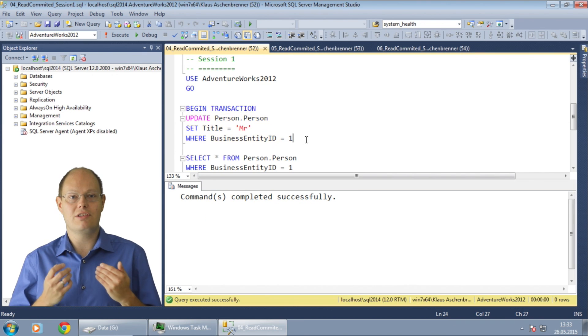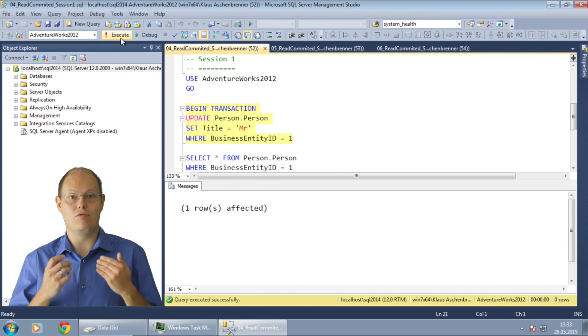Let's start with the first step, our data modification where I just update a specific record in the table person.person. I also start an explicit transaction here and as you can see the transaction is not yet committed. So we just have a pending transaction.